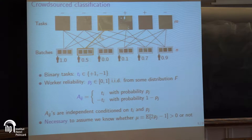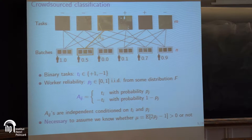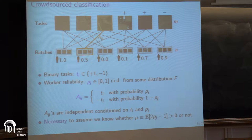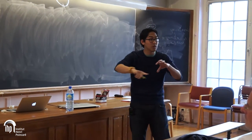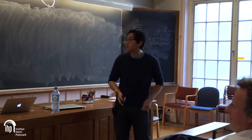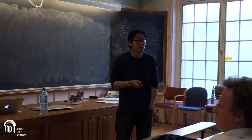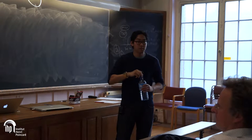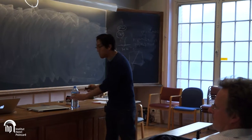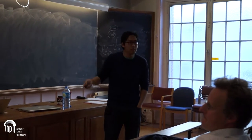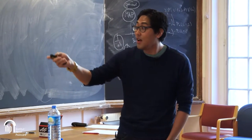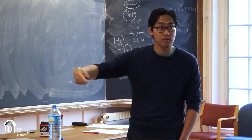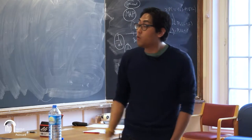This can be thought of as using binary symmetric channels with unknown noise, but you're not allowed to do coding on the image side — so you can only use repetition codes. You have binary symmetric channels coming from some i.i.d. channel status, and you want to understand the fundamental limit and whether there's an efficient algorithm achieving it. We're interested in the high-dimensional setting where degree is order one, so the graph is very sparse.